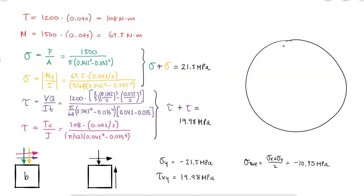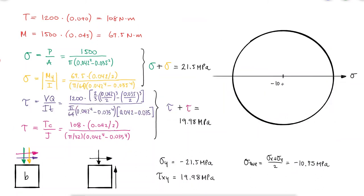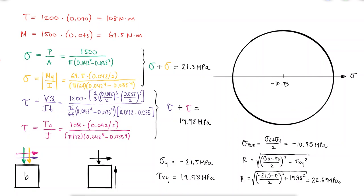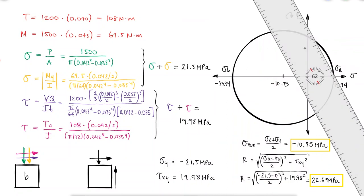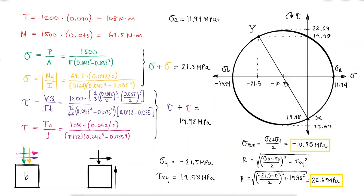The center of the Mohr's circle would be located at 10.75 and the radius would be 22.69. Principal stress sigma A would be equal to the center plus the radius and principal stress sigma B would be equal to the center minus the radius.